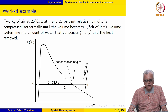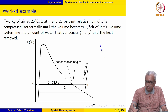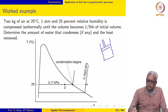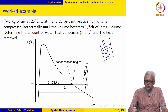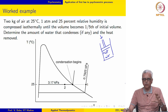The next example: 2 kg of air at 25°C, 1 atmosphere and 25% relative humidity is compressed isothermally until the volume becomes one-fifth of the initial volume. We are asked to determine the amount of water that condenses, if any, and the heat that is removed. We may think of a piston-cylinder mechanism containing moist air being compressed to one-fifth of its initial volume.